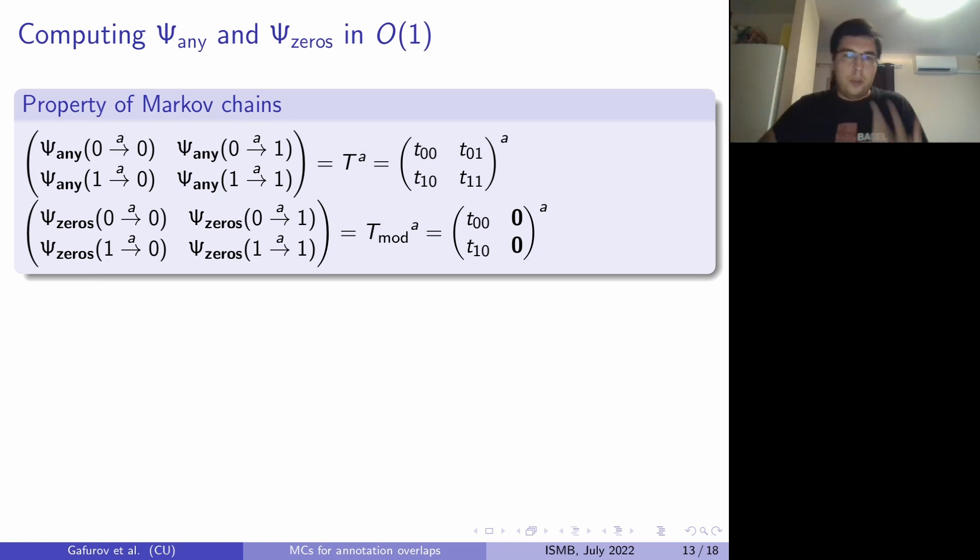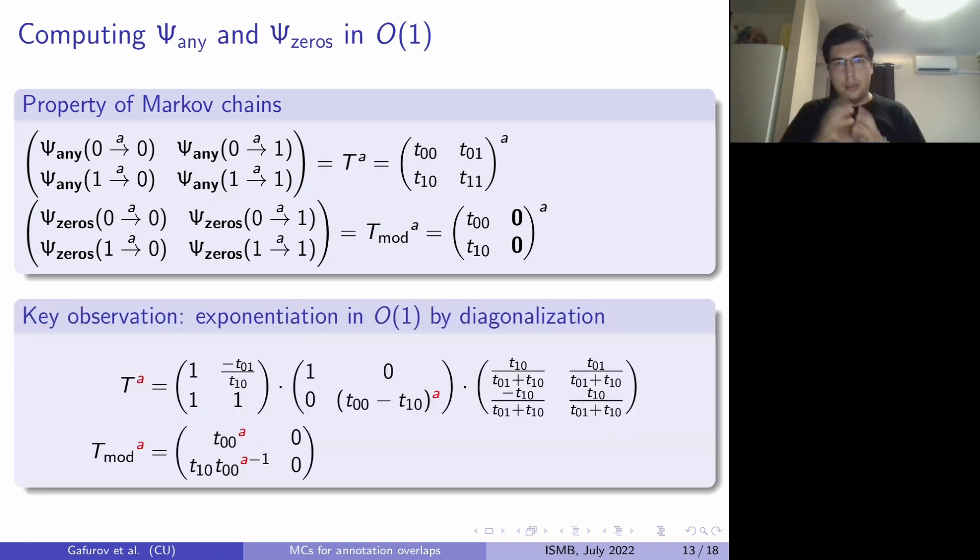And the same goes for psi_zeros. And now we only have to exponentiate the matrices, and then the rest is done. And here is the key observation that we can compute an arbitrary exponent of those matrices using diagonalization in constant time. And this concludes the algorithm. We are able to compute everything in constant time, so the dynamic programming table can be computed in O(M squared) time.